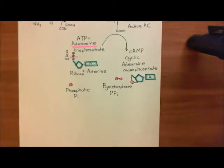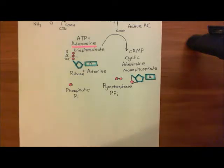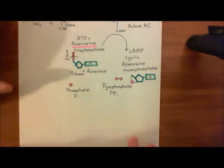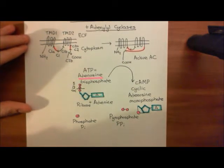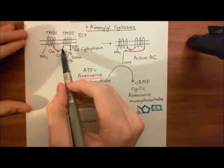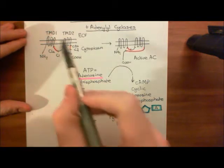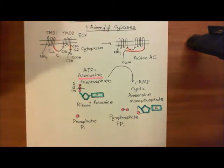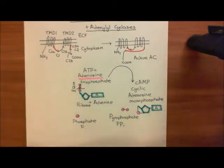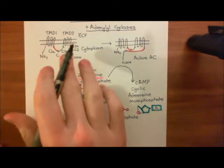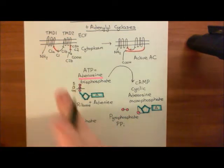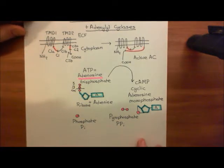That's what adenylyl cyclases do — they catalyze this conversion. There are nine known adenylyl cyclase enzymes which look like this structure. There is a tenth one as well, but it looks nothing like this — instead of being implanted in the plasma membrane it's in the cytoplasm, and we're not going to discuss that.